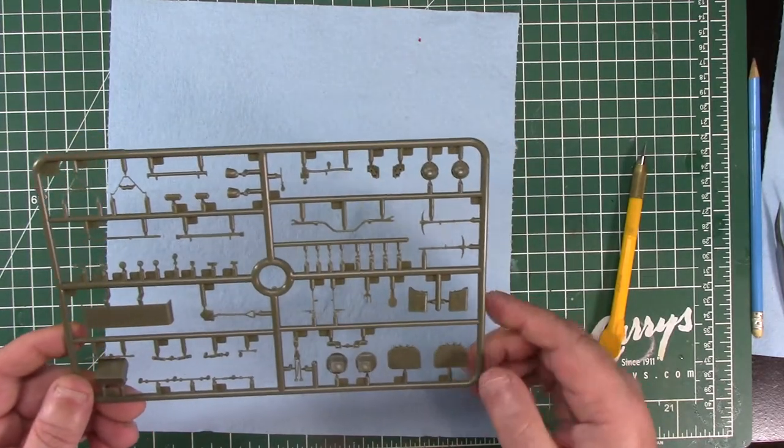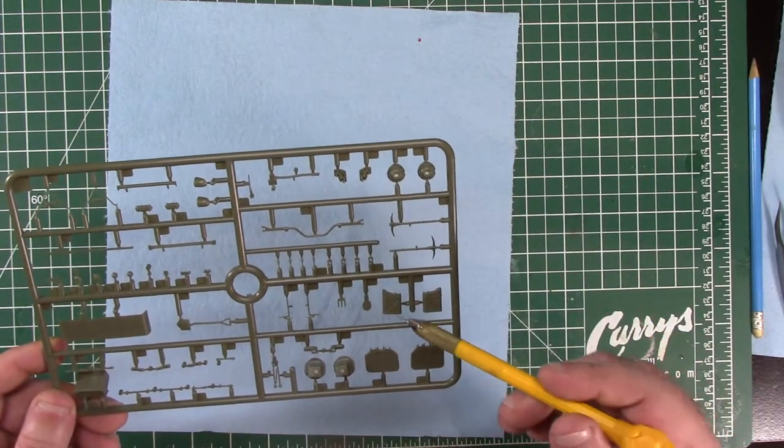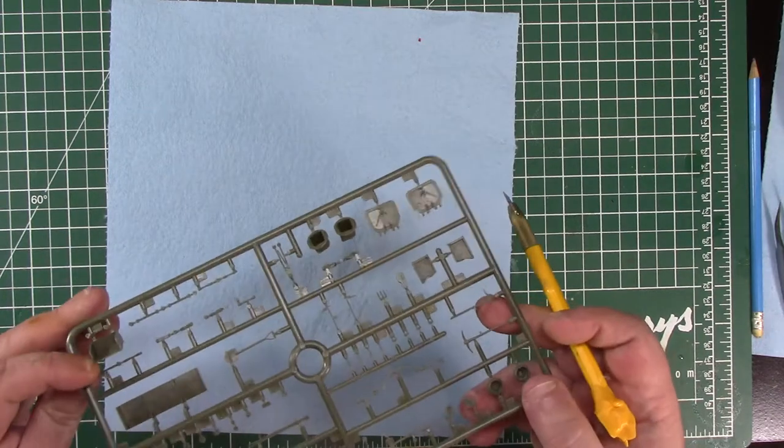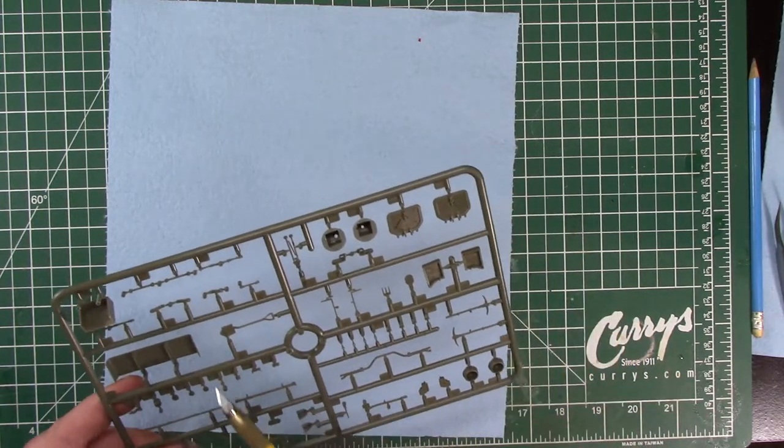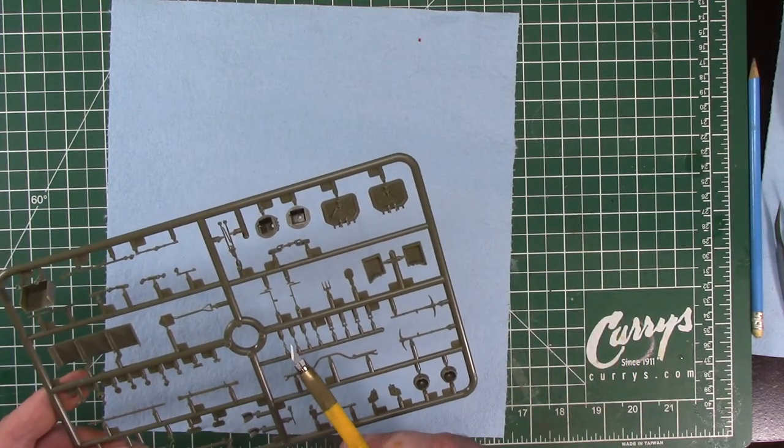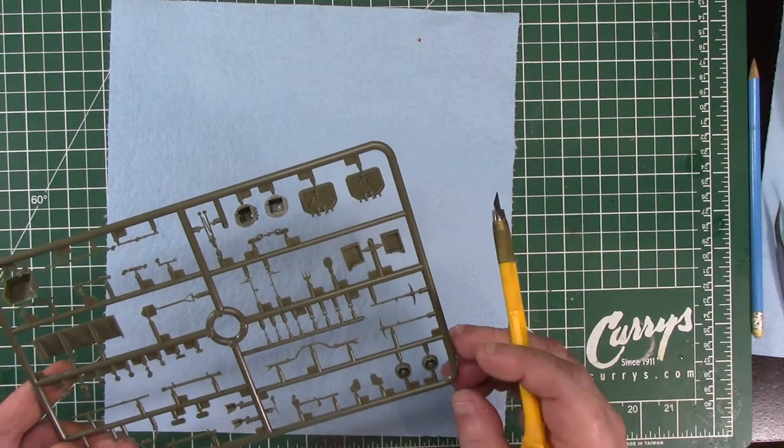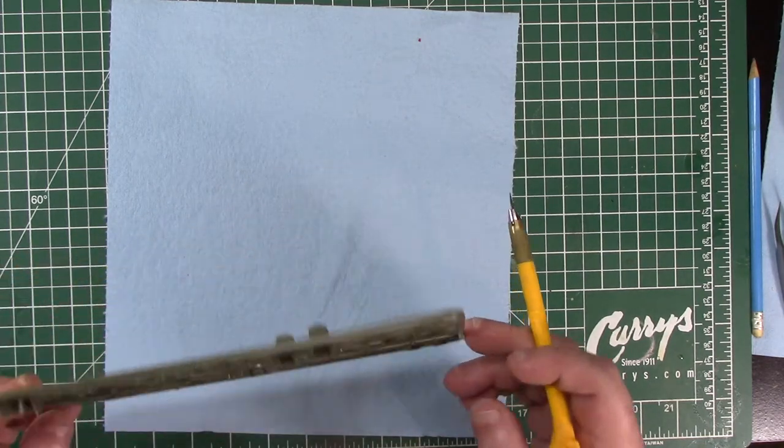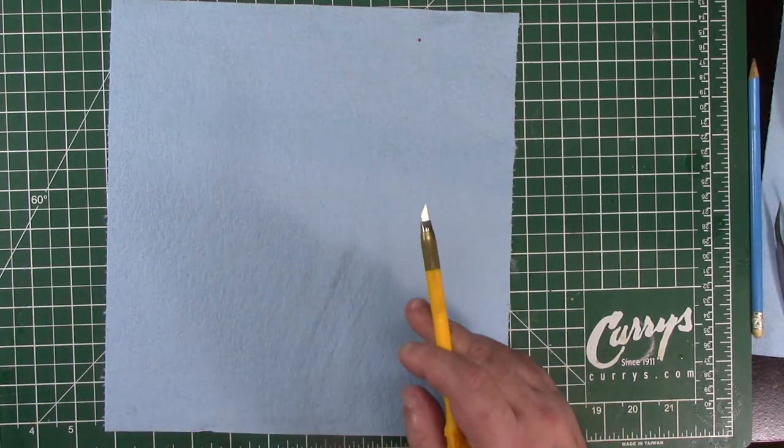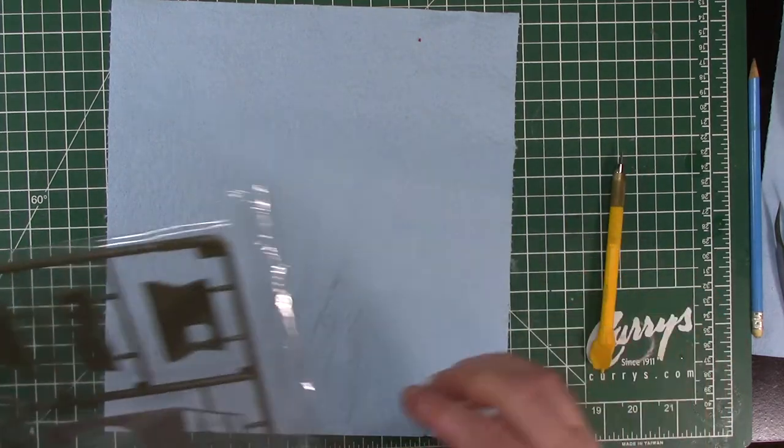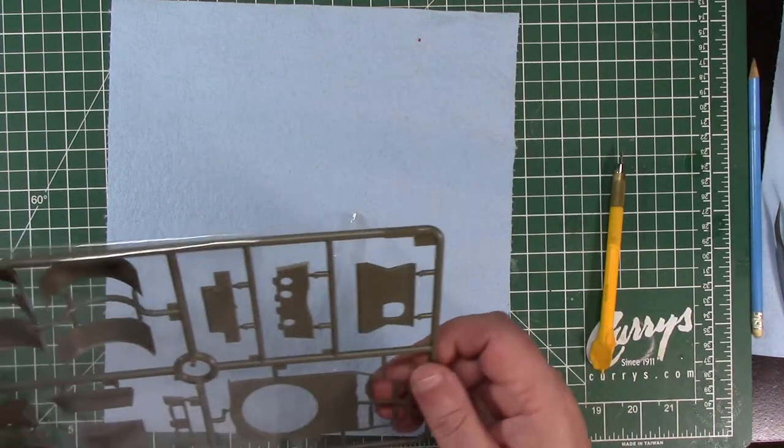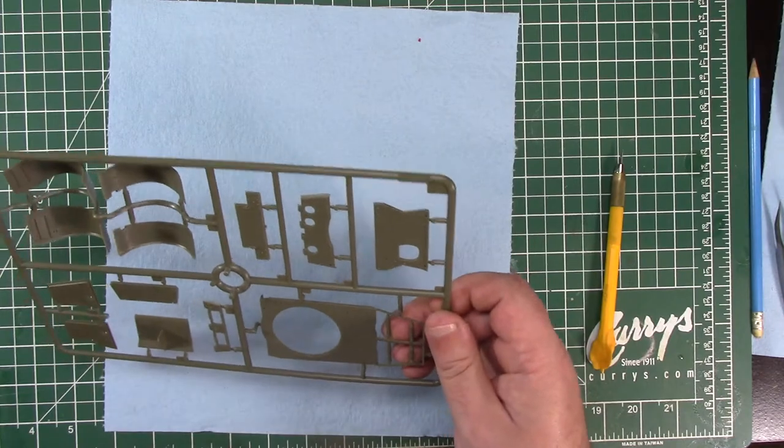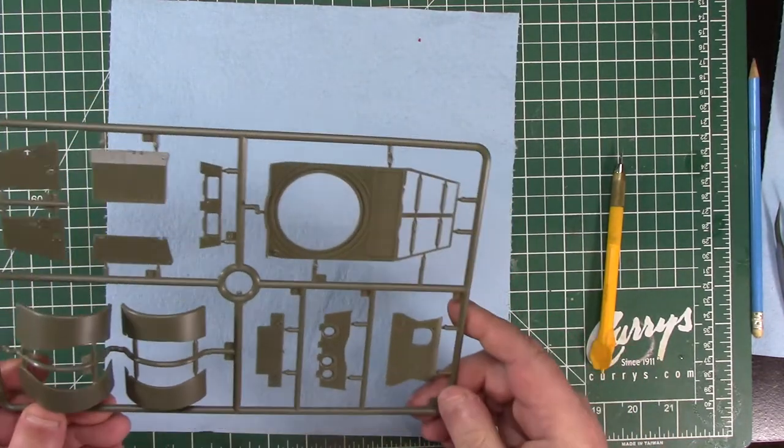Tools, hatches, fuel tank, more bits and bobs, eyelets, and fenders on the top of the hull.